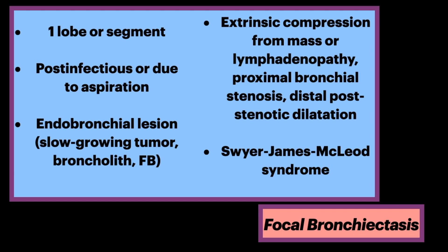The differential of bronchiectasis depends on the distribution. Focal bronchiectasis is confined to one lobe or segment, and is often post-infectious or secondary to aspiration. Other causes include post-obstructive bronchiectasis from an endobronchial lesion such as a slow-growing tumor, broncholith, or foreign body. Additional causes are extrinsic compression by mass or lymphadenopathy, proximal bronchial stenosis, and distal post-stenotic dilatation.